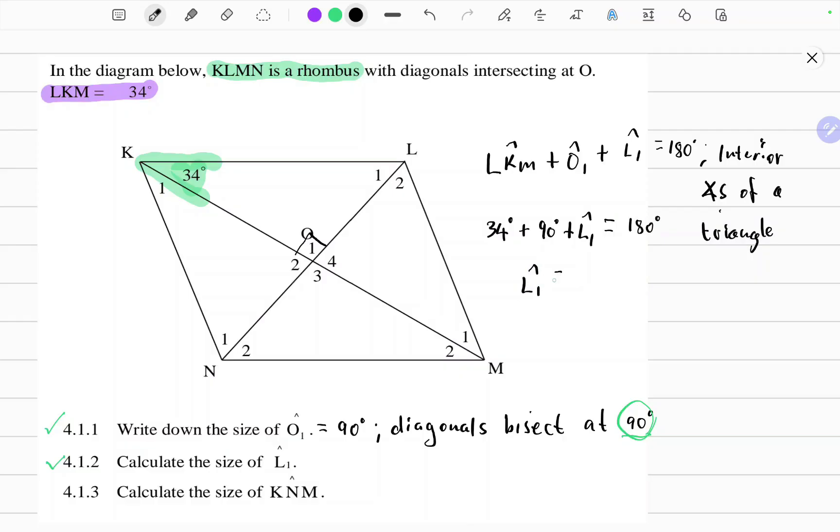So we can isolate L1, take the other angles to the other side, 180 degrees minus 90 minus 34 degrees. Therefore angle L1 equals 56 degrees.